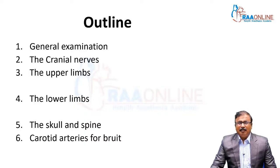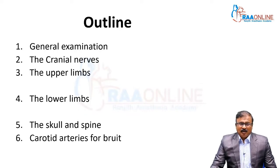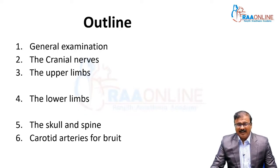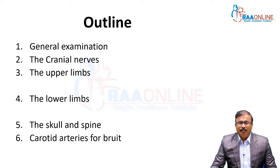We will be discussing the important aspects of general examination, what about the cranial nerves, how to write and examine them. We will be stressing the important aspects of each cranial nerve: motor system, upper and lower limbs along with sensory system, skull and spine, and carotid arteries.